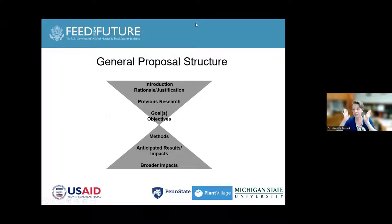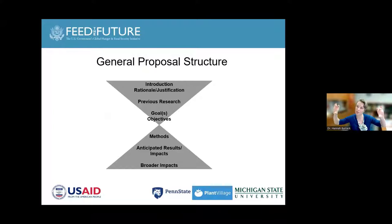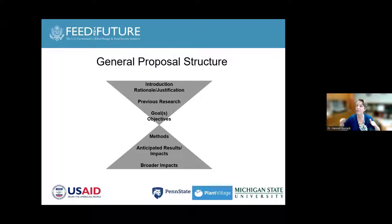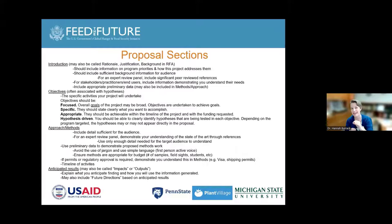This schematic illustrates the type of information I present in a proposal. I start broad with my introduction, rationale, and justification — the big picture. I then narrow down to previous work that relates to my project, then the most specific part: goals, objectives, and methods. I then broaden out to anticipated results and impacts, and finally, beyond the scope of this project, the potential broader impacts. This hourglass shape is how I construct the information I present in a proposal.